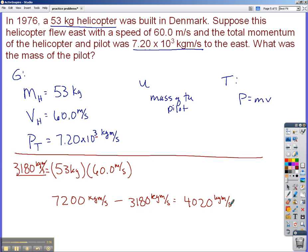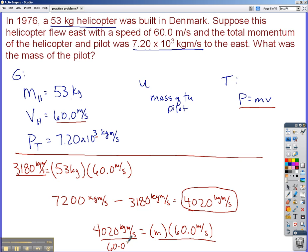So now that I know the momentum due to the pilot, right here, I can take that along with this velocity and figure out the unknown of the mass. So I'm still using this formula. I'm going to take 4,020 kilogram meters per second, which was the momentum due to the pilot, equals unknown mass times velocity of 60.0 meters per second. Divide both sides by 60.0 meters per second.